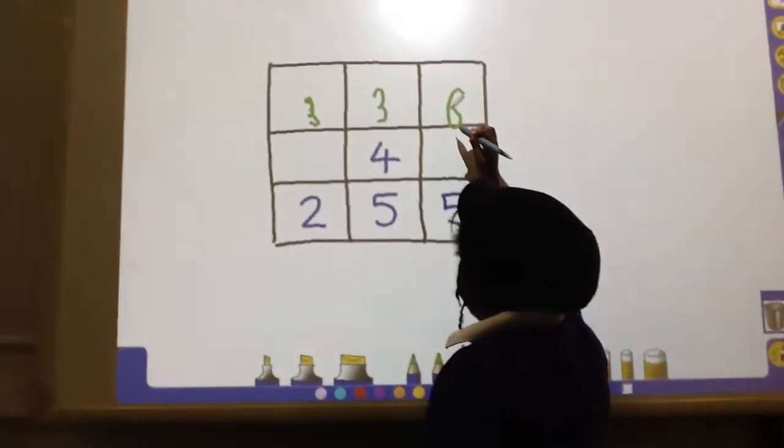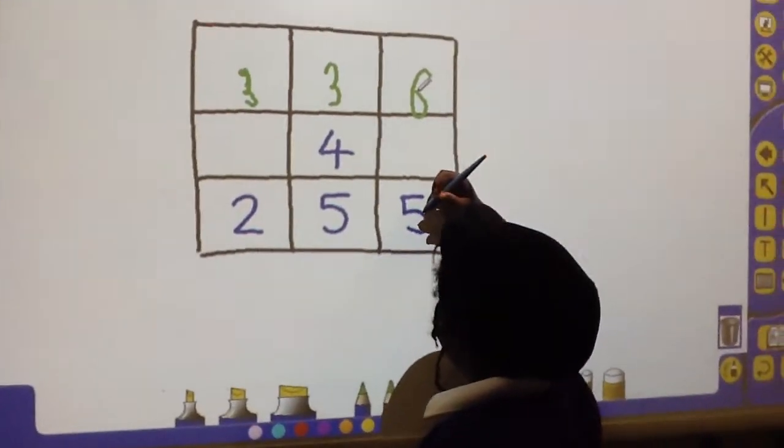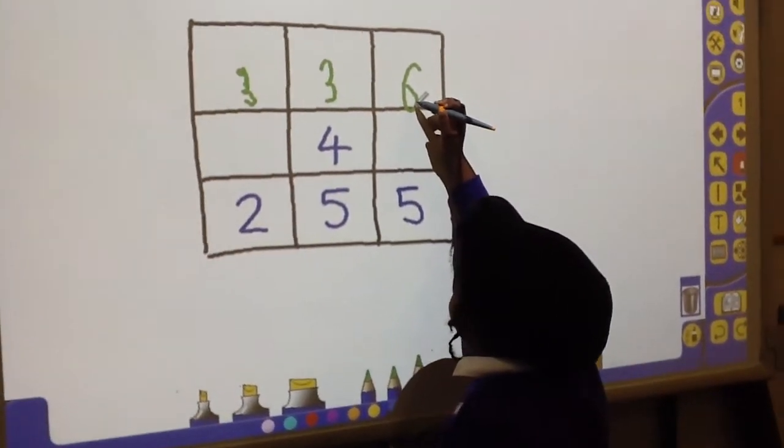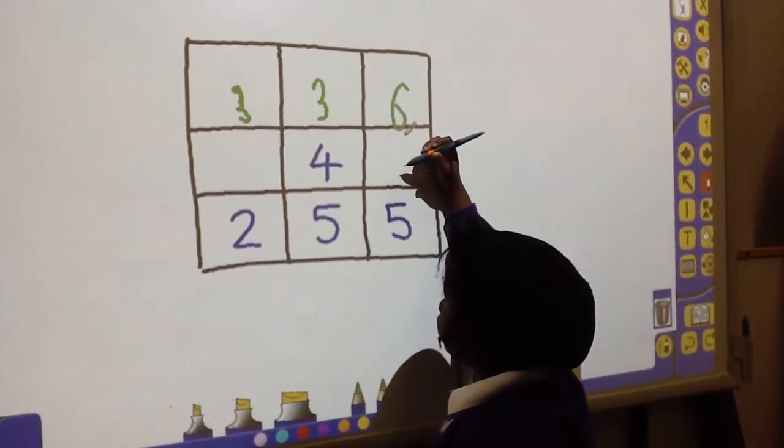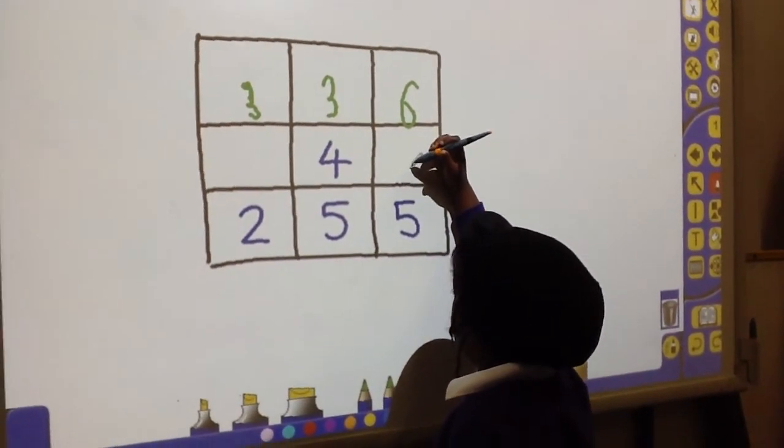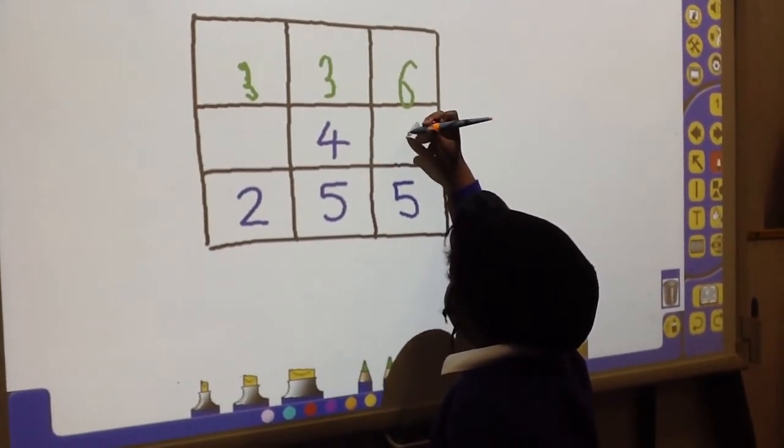This way is the easiest, so you can do 5 add 6 equals 11. So 11 plus something equals 12. It's 1.